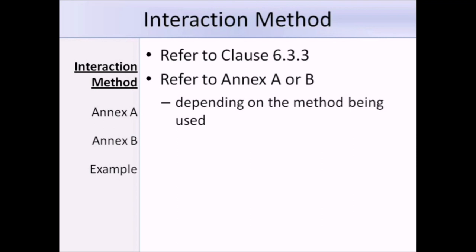For the interaction method, we need to refer to Clause 6.3.3 of EN 1993 Part 1-1, and we will also need to refer to either Annex A or Annex B, and the choice of annex depends on the specific method that we use.